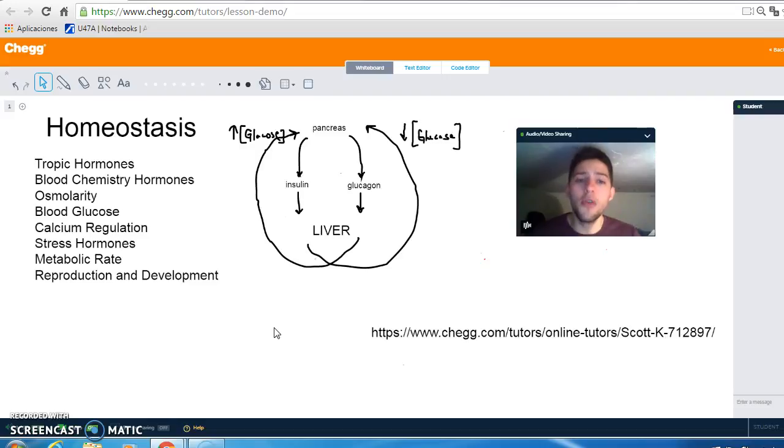Homeostasis plays a really big role in terms of the endocrine glands in our body, and in terms of the hormones in our body. Homeostasis plays a really big role in terms of tropic hormones, blood chemistry hormones, osmolarity, blood glucose, calcium regulation, stress hormones, metabolic rate, as well as reproduction and development.